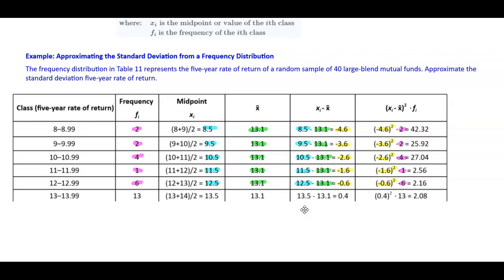The class 13 to 13.99 has a frequency of 13. The midpoint is 13.5 and the sample mean is 13.1. Taking 13.5 minus 13.1 gives 0.4. 0.4 squared times the frequency of 13 gives 2.08.